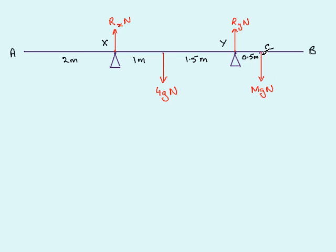We hang a mass of M kilograms from C, so its weight Mg Newtons acts downwards. The effect is to tilt the rod about the pivot Y, causing it to lift off support X. Just at the point of tilting, the reaction at X reduces down to zero and disappears from our force diagram.